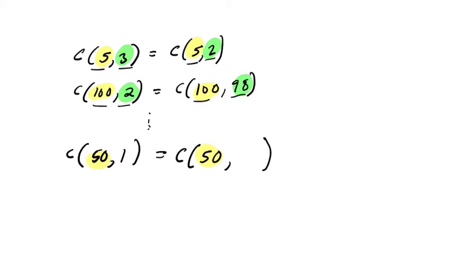So what do we expect to maybe happen down here? We get a 1 and here 49, because 1 and 49 is 50.